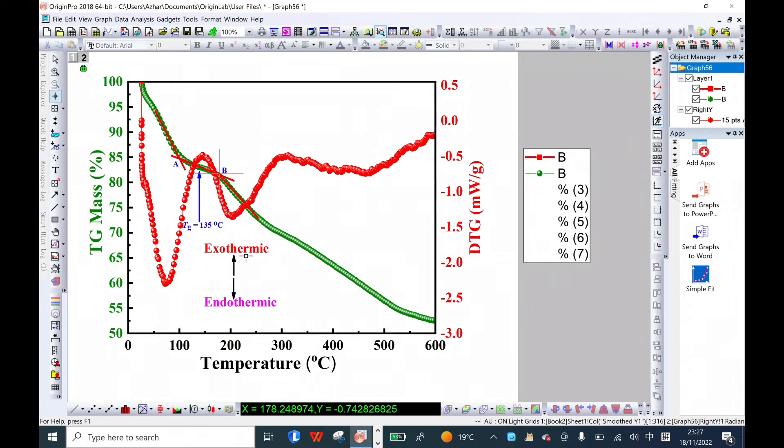Another important thing to note is that at the glass transition, an exothermic reaction peak will appear on the DTG curve. For endothermic reactions, heat is absorbed. Exo means heat is removed, and endo means heat goes inside the sample.